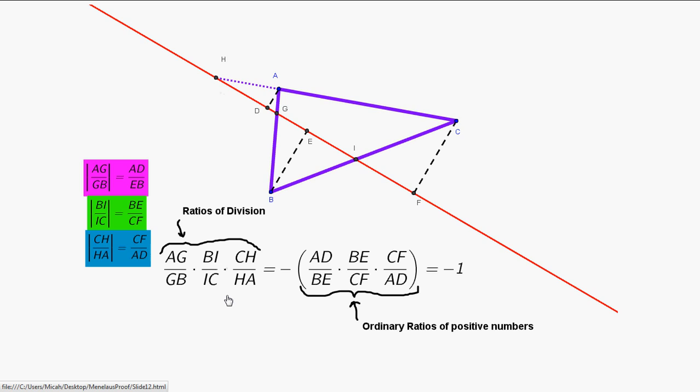So, in any case, you either have one negative number here, or zero, or all three negative numbers here. And, in all cases, that product will be minus. So, the product of our ratios of division is minus one, exactly as we wanted.